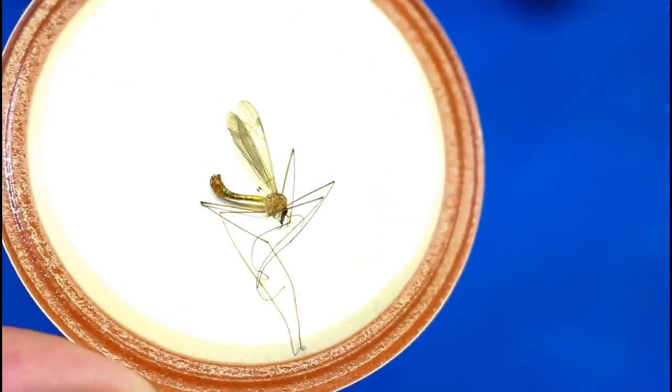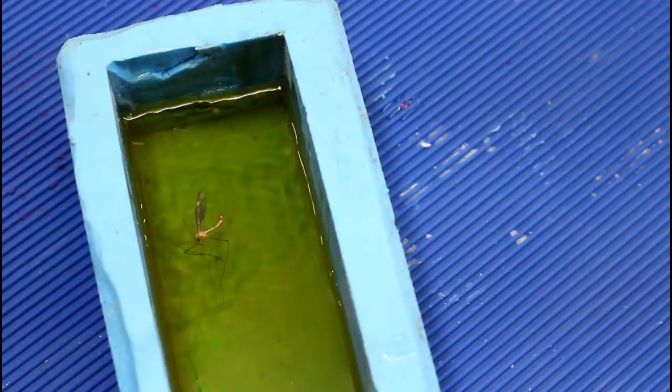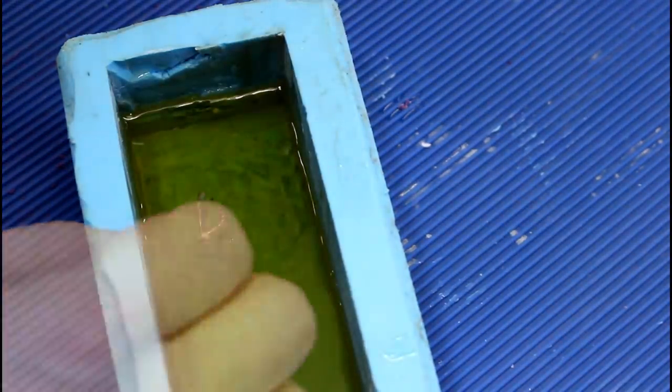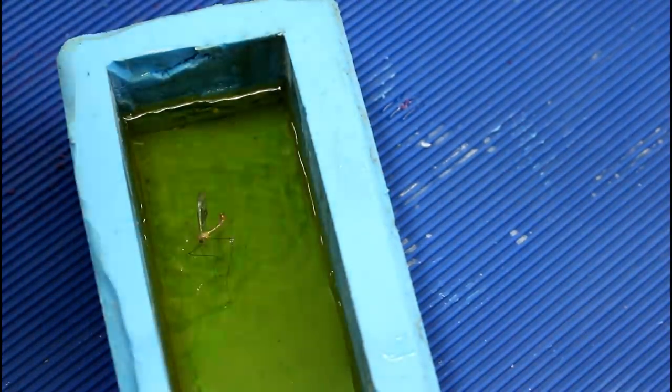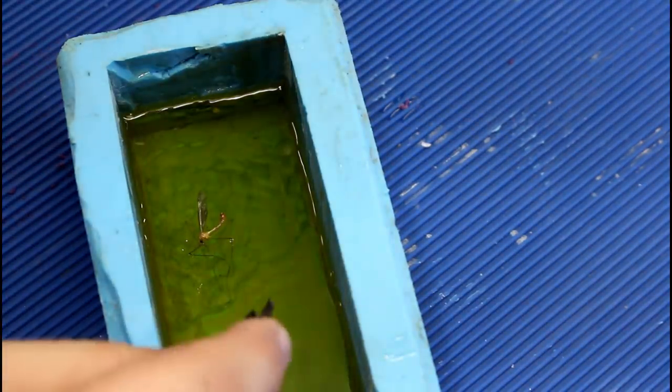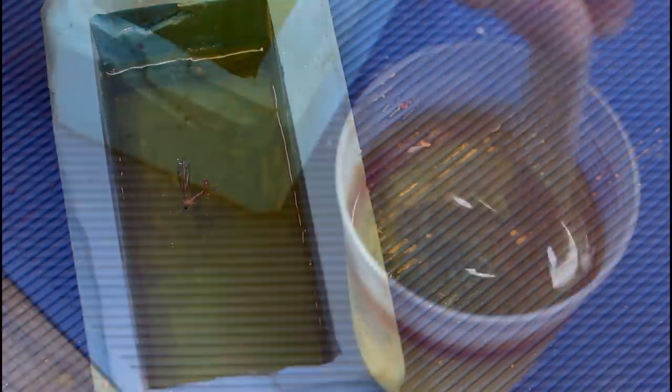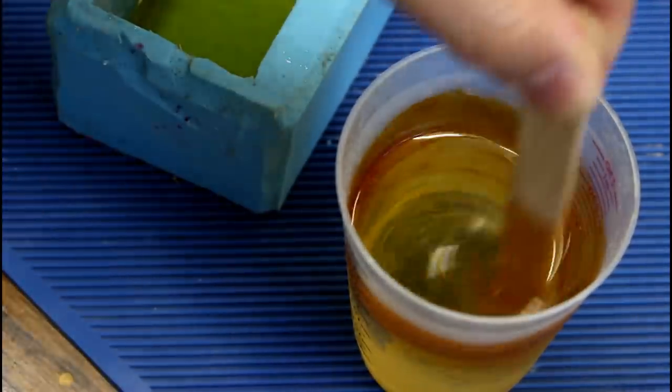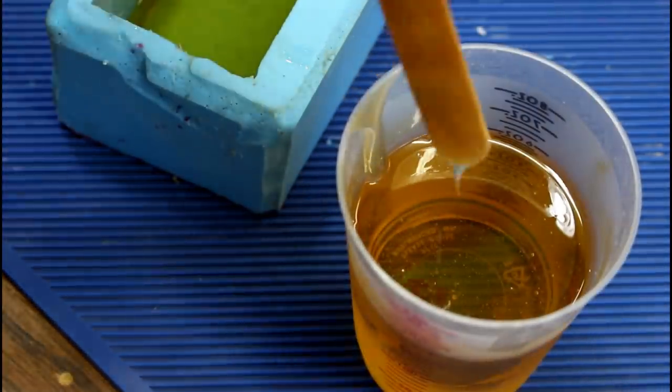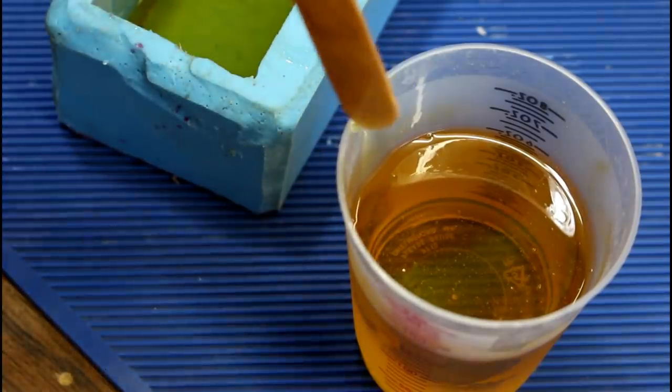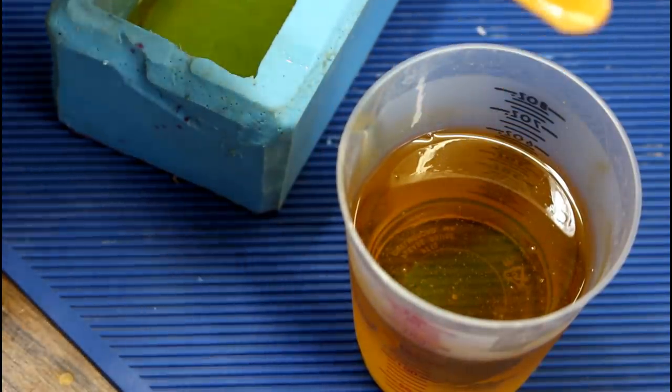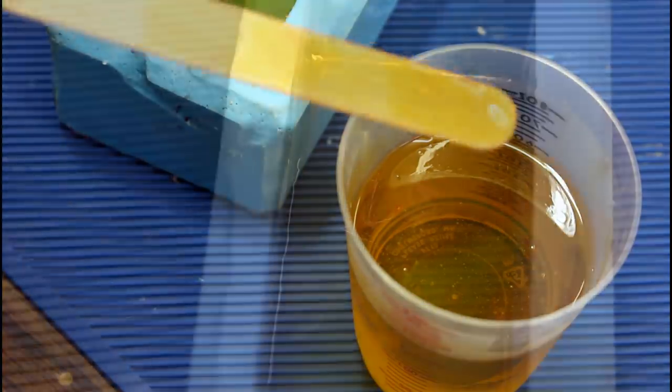And the only other thing you have to be aware of is that any moisture in the bug will cause bubbles in the casting. So what I'm hoping for is that he will stick to this layer. All right, so the only thing to do now is mix up another layer of resin. All right, so the hope is that that little bugger is stuck enough that it will not float when I pour this in.